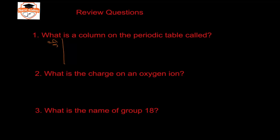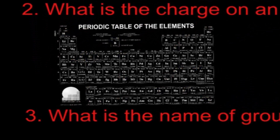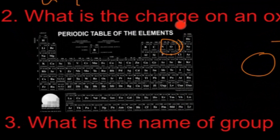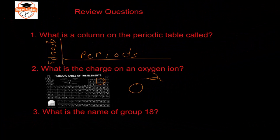Columns are called groups, and rows are called periods. For the charge on an oxygen ion, oxygen is two spaces away from having a full row, so oxygen will make a negative-two charge. For the final question, group 18 is the group where all elements have a full valence shell — those are called noble gases, because they are unreactive.